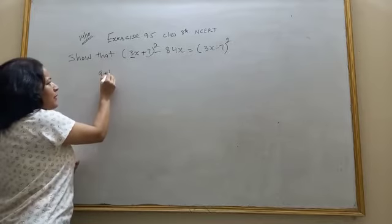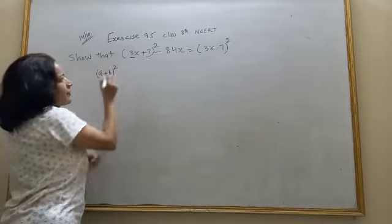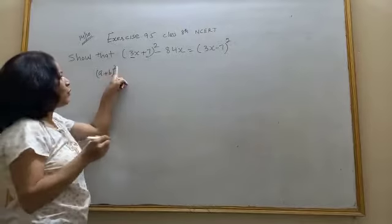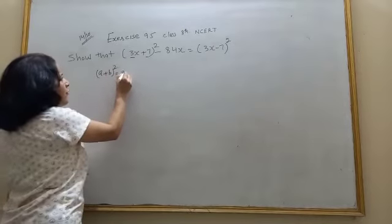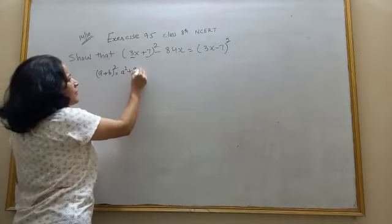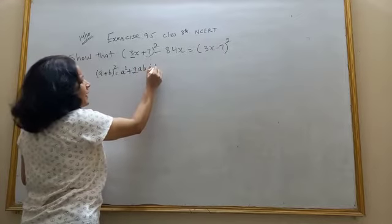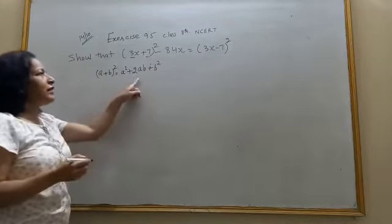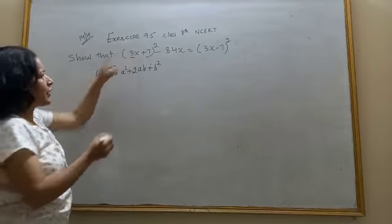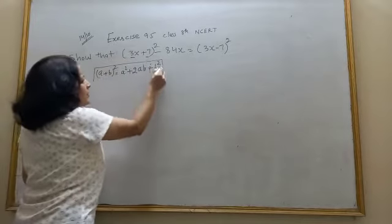A plus B whole square. First term plus second term whole square will be first term square plus 2 into first term into second term plus second term square. I will use this identity to solve 3x plus 7 whole square.